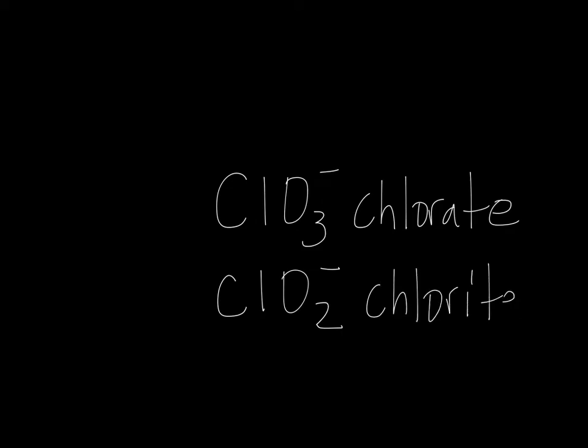ClO3- is the chlorate ion. How do I know then what the chlorite ion is? All of them follow the following trend. If you subtract an oxygen and keep the charge the same, you change the ending from -ate to -ite. So if you memorize the -ate form, one less oxygen with the same charge is the -ite form.